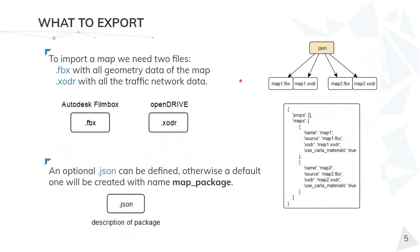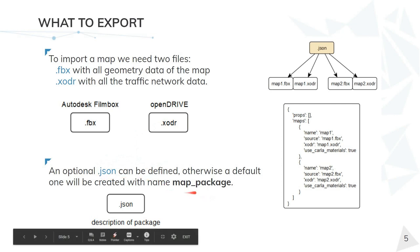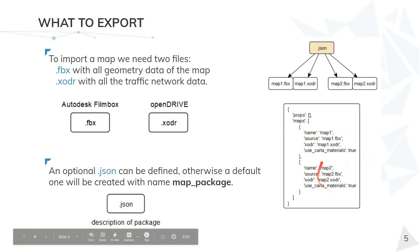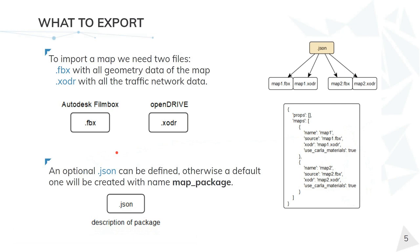First, we are going to see what we need to export. Mainly, the idea is to export two files. One is the Film Box file — FBX — with the geometry of the map. The other file is the OpenDrive with the traffic network description of the map. We can also use a JSON file; this is optional. The name of the JSON file will be the name of the package that we need to know later to export the package. If we don't specify a JSON file, one will be created automatically with the map package name. The JSON file is just a description of the maps and their files — for each map we have the FBX and the OpenDrive. We can define the folder where they are, but this is automatically created if no JSON file is given.